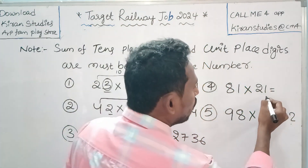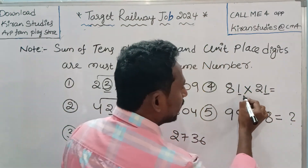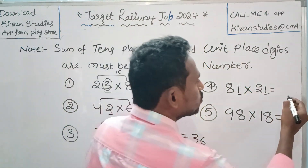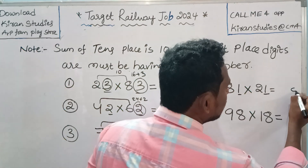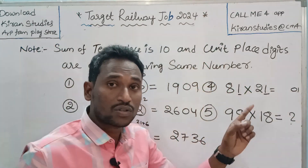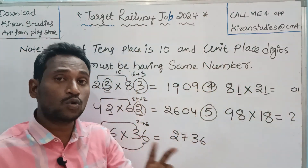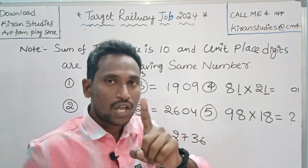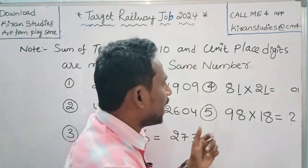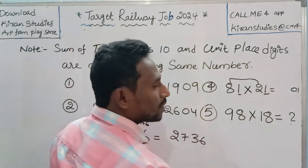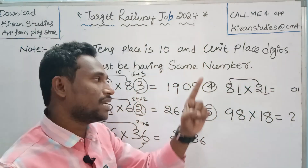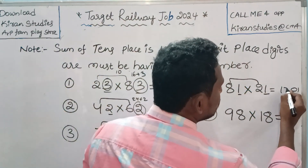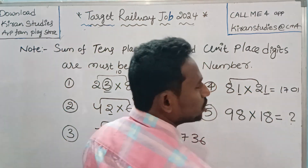Next here: 1 times 1 equals 1. We write two digits, so write 01. Then: 8 times 2 is 16. Then 16 plus 1 equals 17. So the answer is 1701.